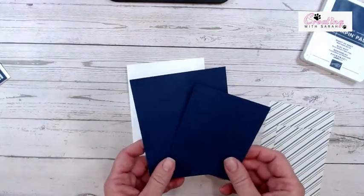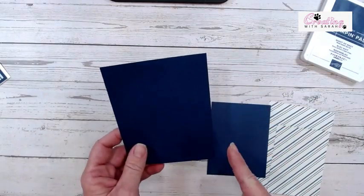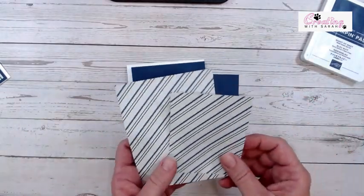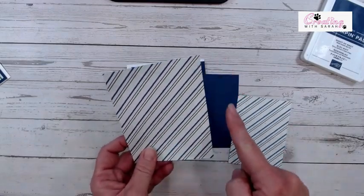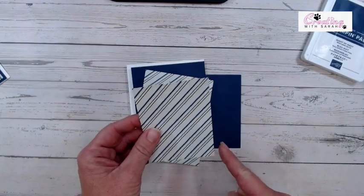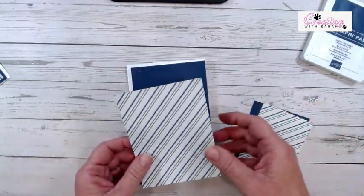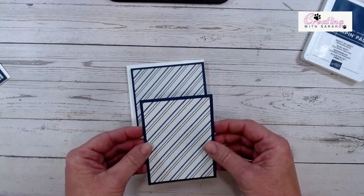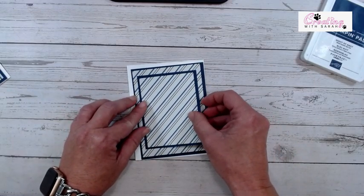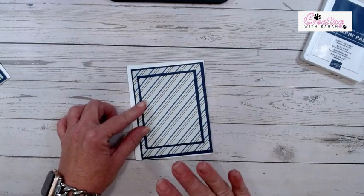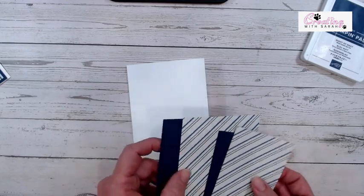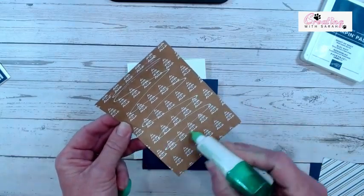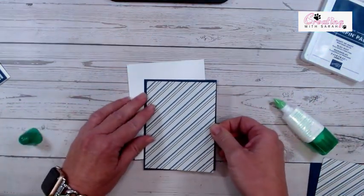So I have two pieces of Night of Navy. One measures four by five and a quarter. And this one measures three and a quarter by four and a quarter. My designer series paper, I have two of them. This one is three and three fourths by five. This one is three inches by four inches. And I honestly did not do this on purpose, but I'm glad I did. When you layer these two pieces together, it actually lines up perfectly. Isn't that crazy? I have no idea how I did it.